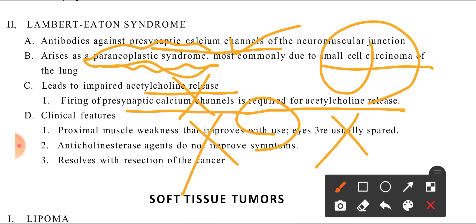To summarize the difference: in myasthenia gravis, there are antibodies against acetylcholine receptors, and it is associated with thymic hyperplasia. In Lambert-Eaton, there are antibodies against calcium channels, and it is associated with small cell carcinoma of the lung.